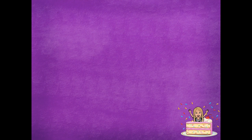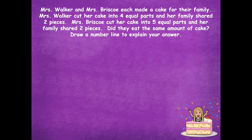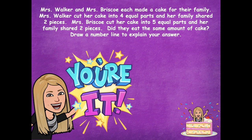There's some delicious cake, which means I'm having a problem about cake! Mrs. Walker and Mrs. Briscoe each made a cake for their family. Mrs. Walker cut her cake into four equal parts, and her family shared two pieces. Mrs. Briscoe cut her cake into five equal parts, and her family shared two pieces. Did they eat the same amount of cake? Draw a number line to explain your answer. Model the cake cut into four equal parts and into five equal parts, find where each family ate two pieces, and see if they're at the same place. Pause the video, draw your number line, and answer.